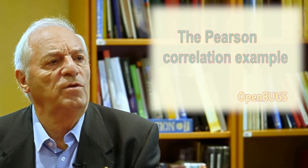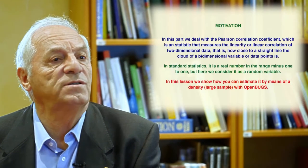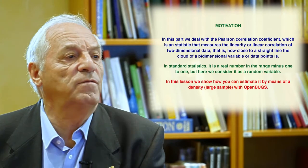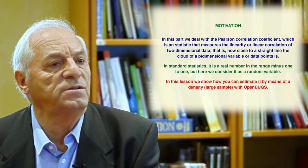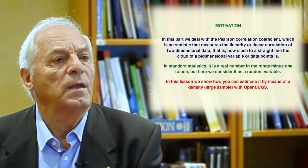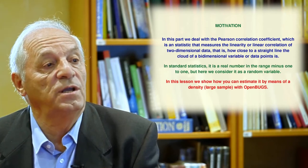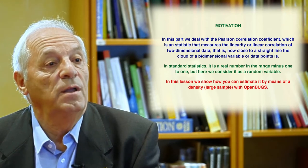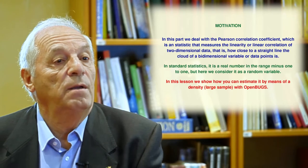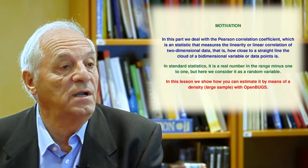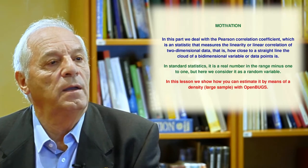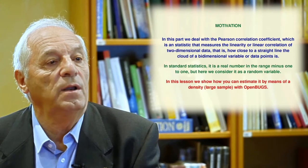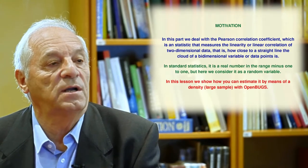The next lesson is dedicated to the Pearson correlation example. First we describe the meaning of this statistic. Of course, in standard statistics, this number ranges between minus one and one, but it is constant. In this lesson, however, we want to estimate it as a density.